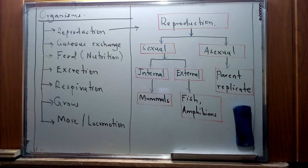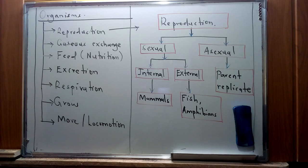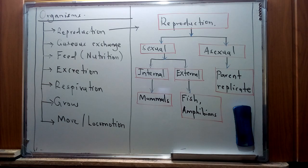We're going to begin with the first characteristic listed: reproduction. Reproduction basically entails the production of new offspring from a species, and we'll look into it in broader detail as it forms our basis for discussion today. Living organisms also display gaseous exchange, which is a physical process by which gases move actively across the exchange membrane — we'll look into that under the topic of gaseous exchange.